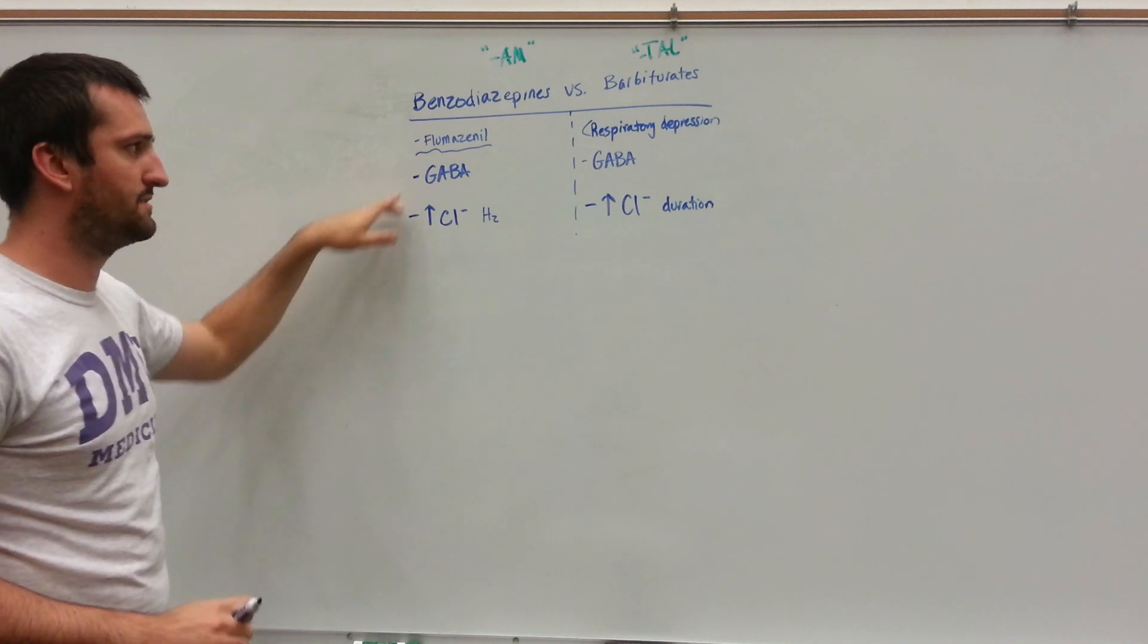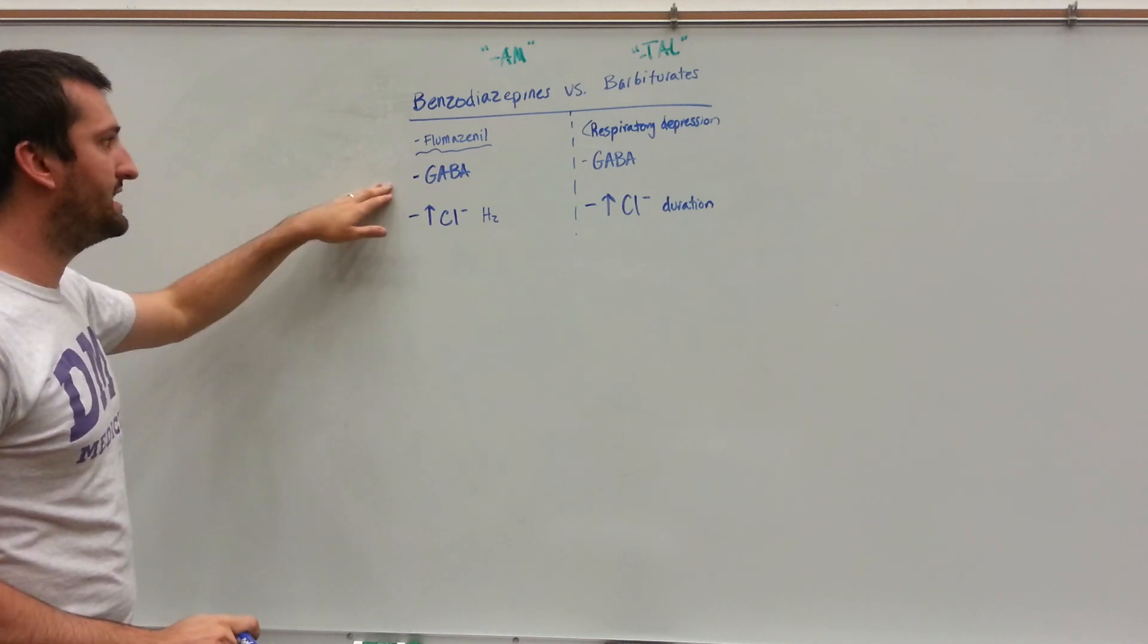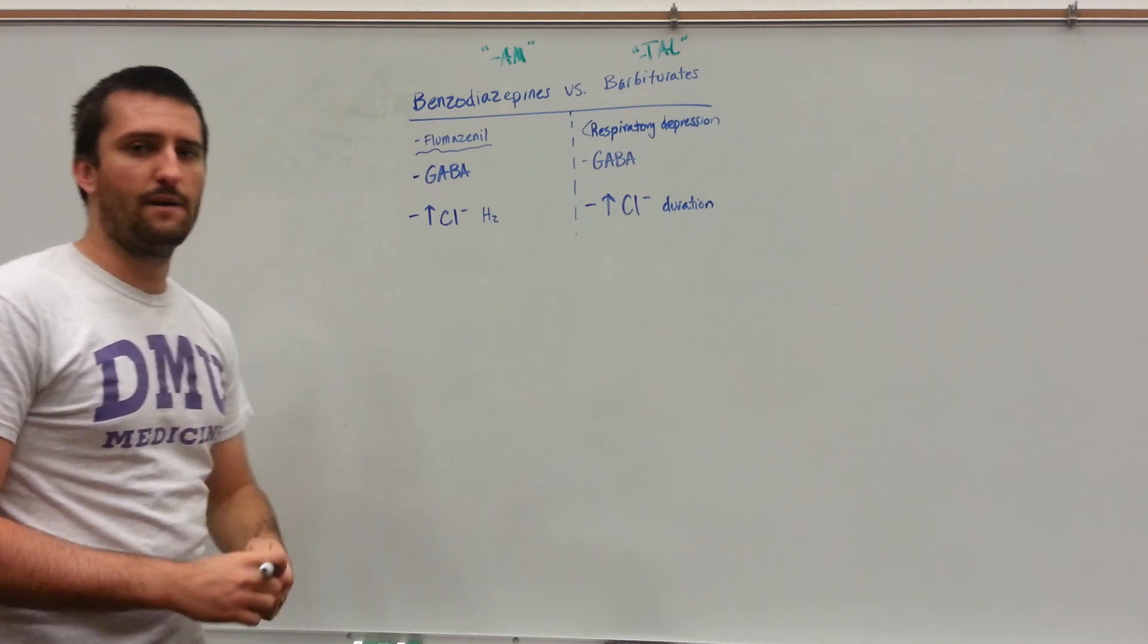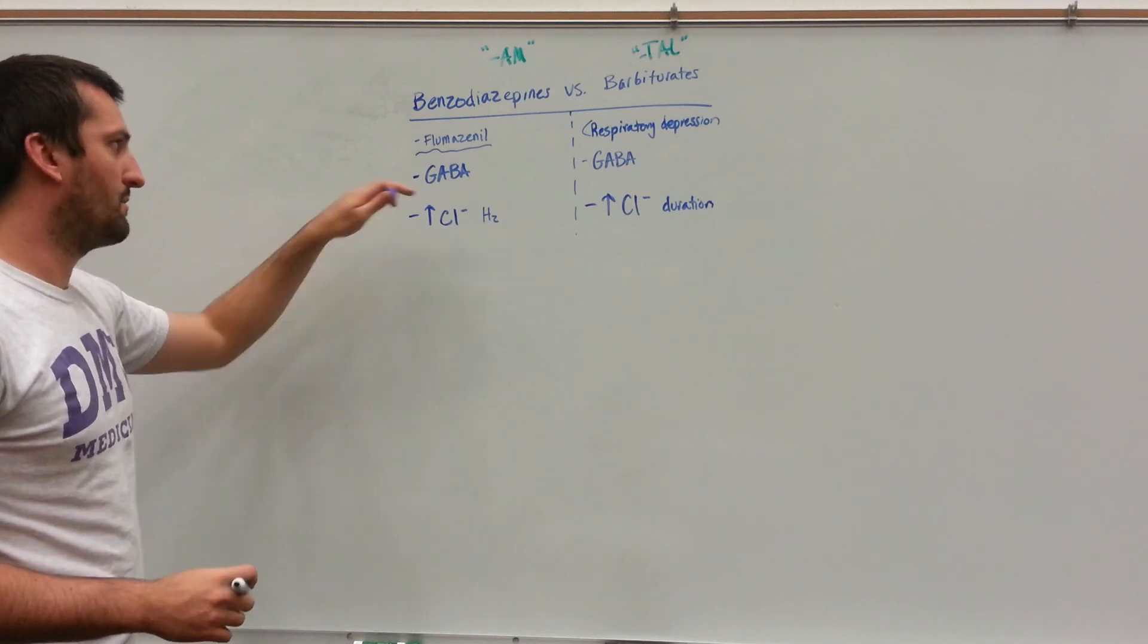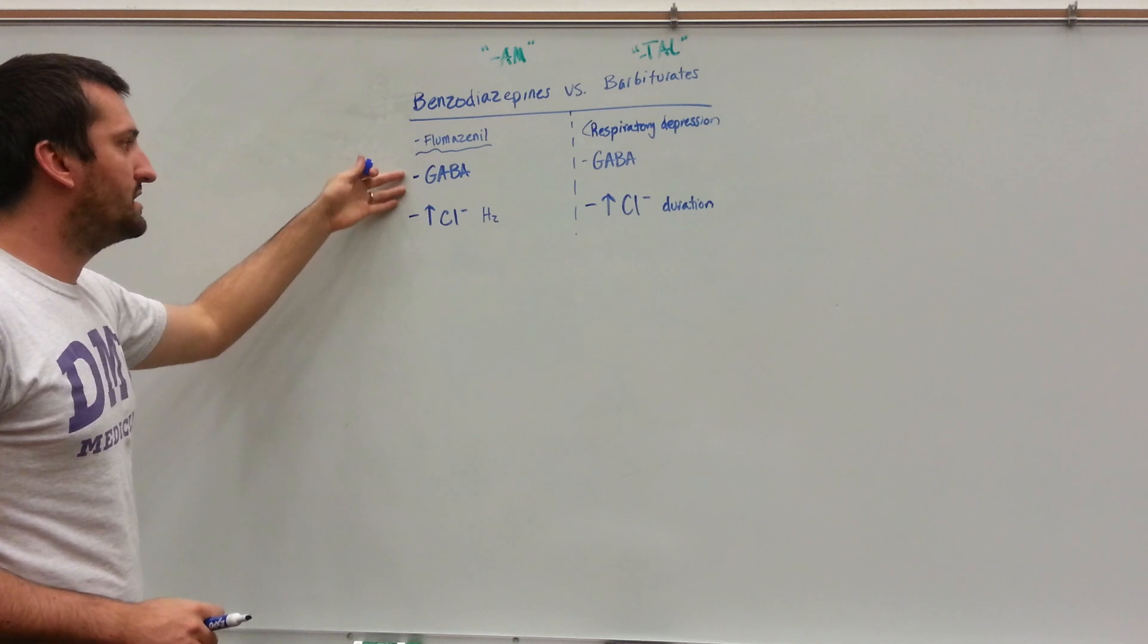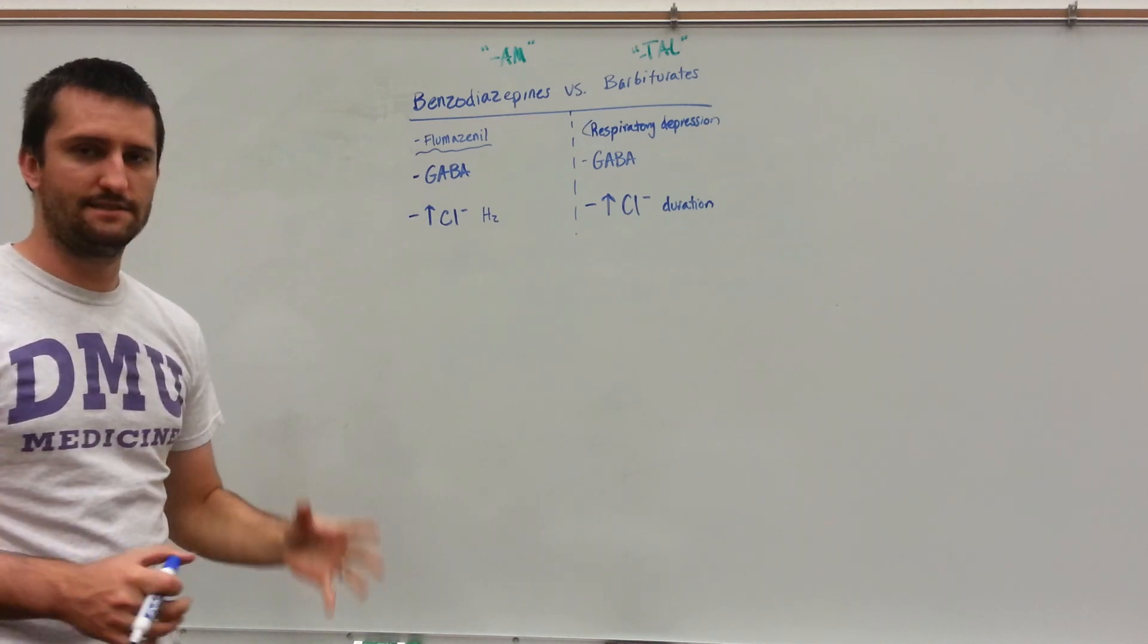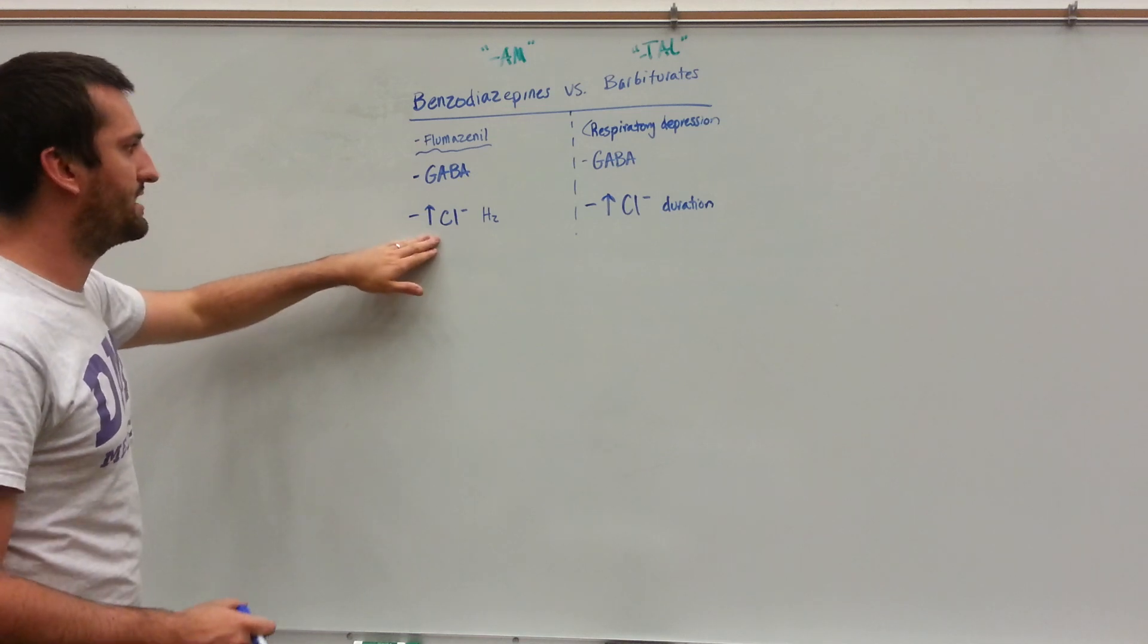Now they act via a similar but different mechanism. Similar meaning they both use GABA, specifically GABA-A subtype A, an inhibitory neurotransmitter. This is going to inhibit cells. Now how are you going to inhibit it?